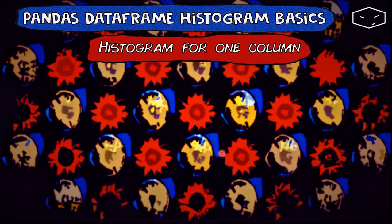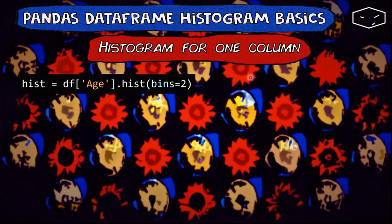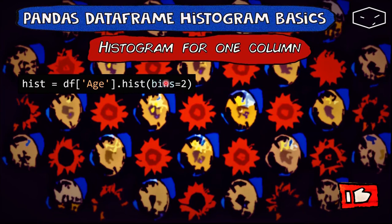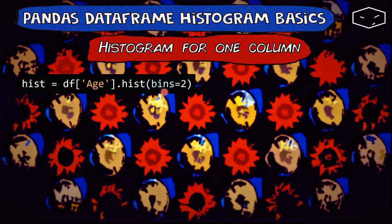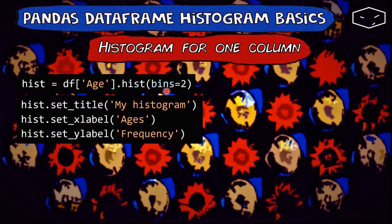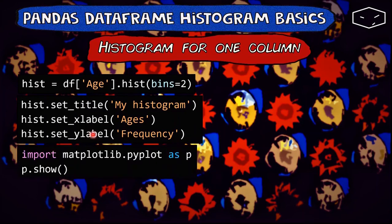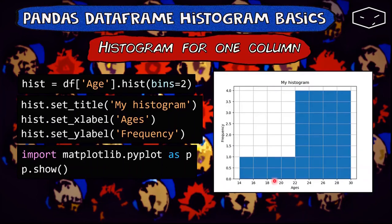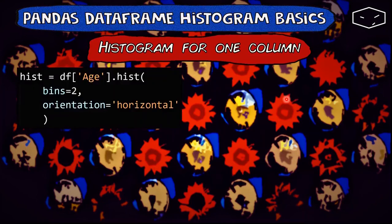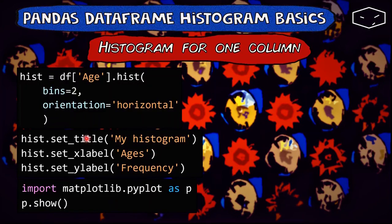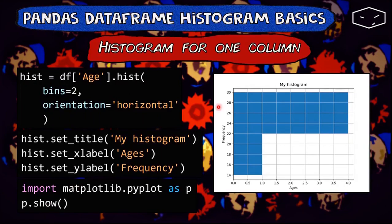Let's review. To create a histogram for one column of our data frame, we just need to access the column and call the hist() function. We can provide the bins with a value we want — the default is 10 if we do not provide it. We saw that we can set the title, set the labels, and how to show the plot. We also saw how to do a horizontal histogram. To do that, we need to provide the parameter orientation equals 'horizontal', and the rest is the same — we can set the title, the labels, and show the plot.